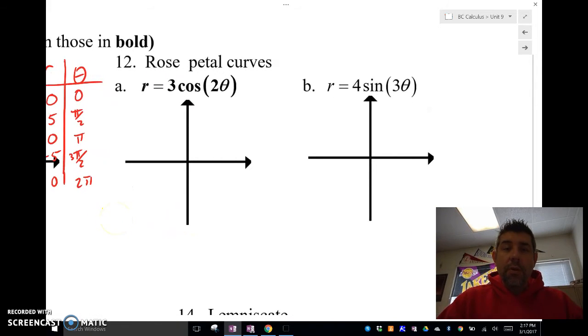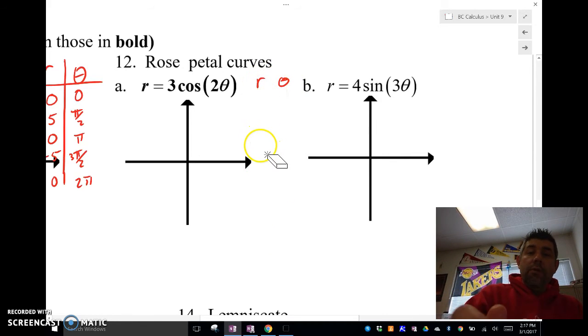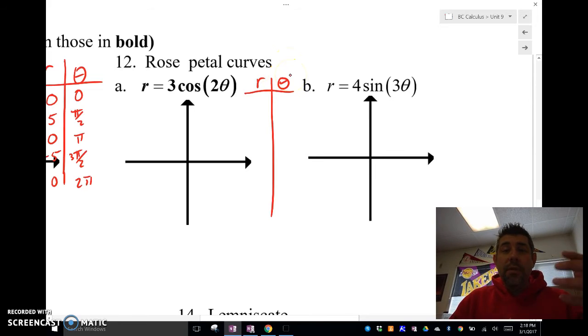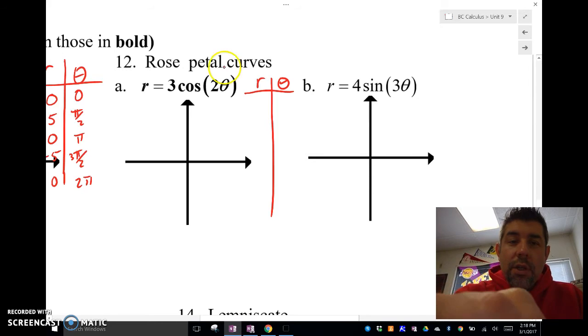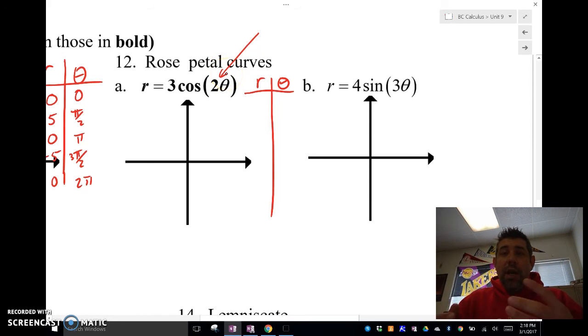We've got another type of graph called a rose petal curve. And with rose petals, what you're going to do for your theta, you've got to think a little bit on what your values of theta are going to be. And for roses, I've got a much longer video that I really go in depth on how to graph these rose petal curves on my YouTube channel. But for kind of a quick basis here, you're going to look at the number inside here. If the number is even, it's going to give you twice that many petals. If it's odd, it's going to give you exactly that many petals. So, in this case, I know this is going to be a four-petaled rose.